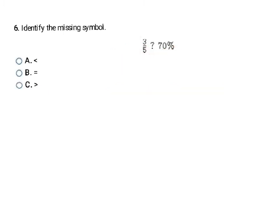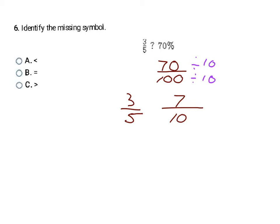Here I have a fraction and a percent. I'll convert 70% to a fraction: all percentages are out of 100, so that's 70/100, which reduces to 7/10 by dividing by 10. Now I have 3/5 and 7/10. To compare them I need a common denominator of 10: multiply 3/5 by 2/2 to get 6/10. Since 6/10 is less than 7/10, the final answer is A.